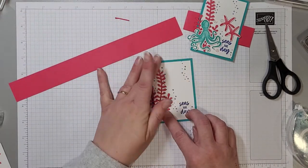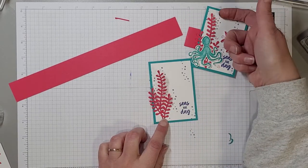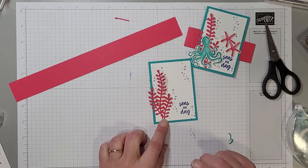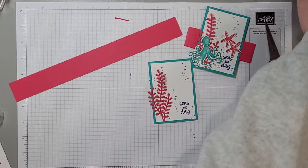Now you can use your multi-purpose glue or your fine tip glue, but I like the way this one looks where it's not completely flat and it gives it a little bit of dimension. So to create that what I've done is use my stamping dimensionals.